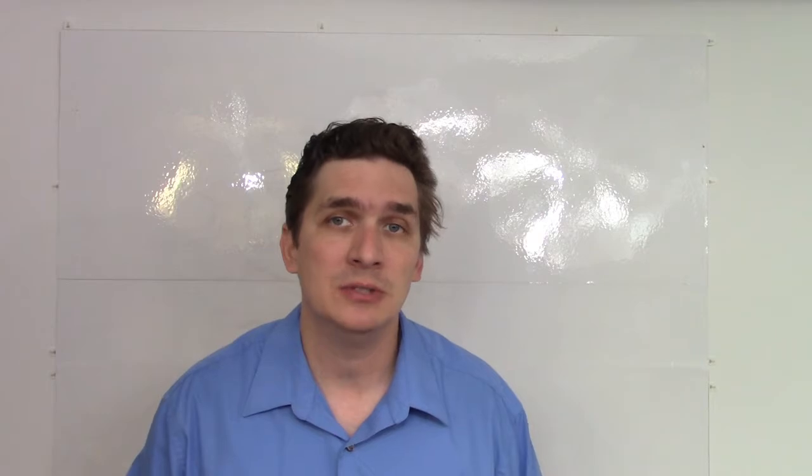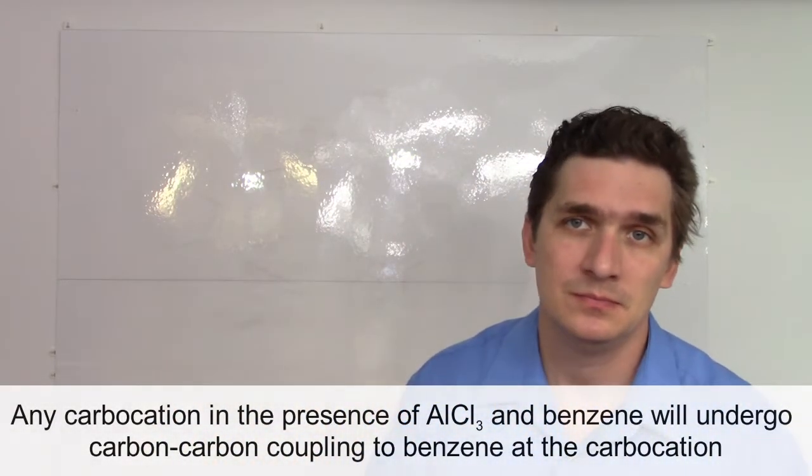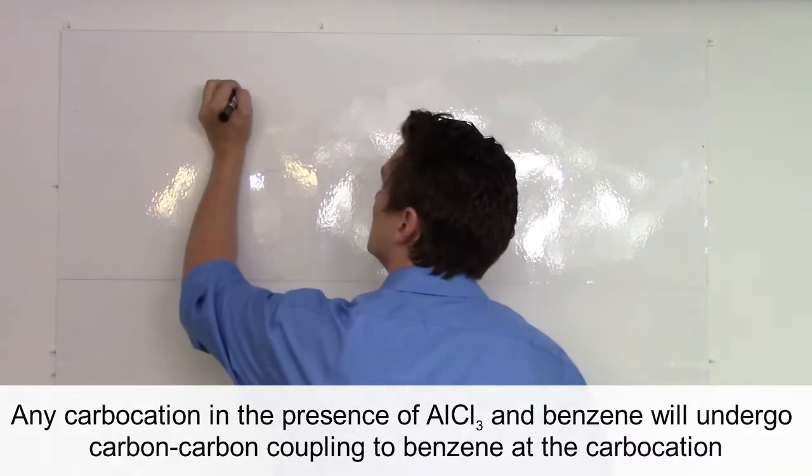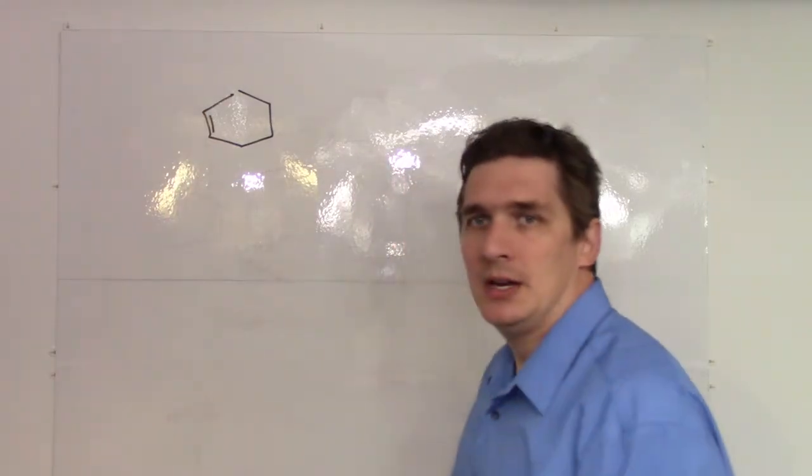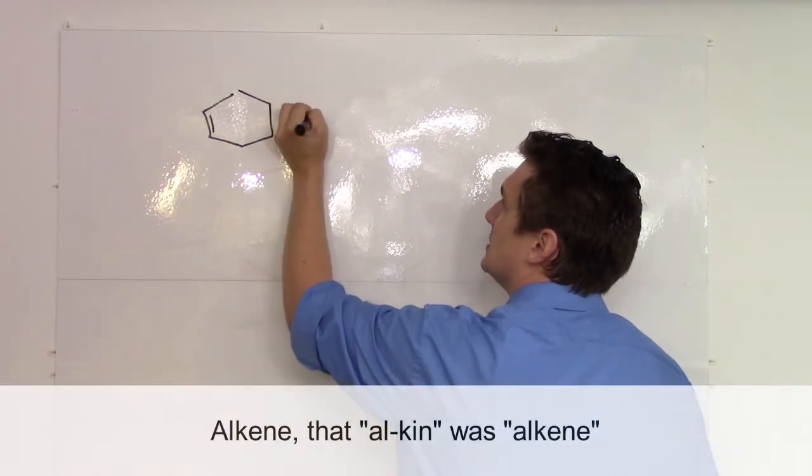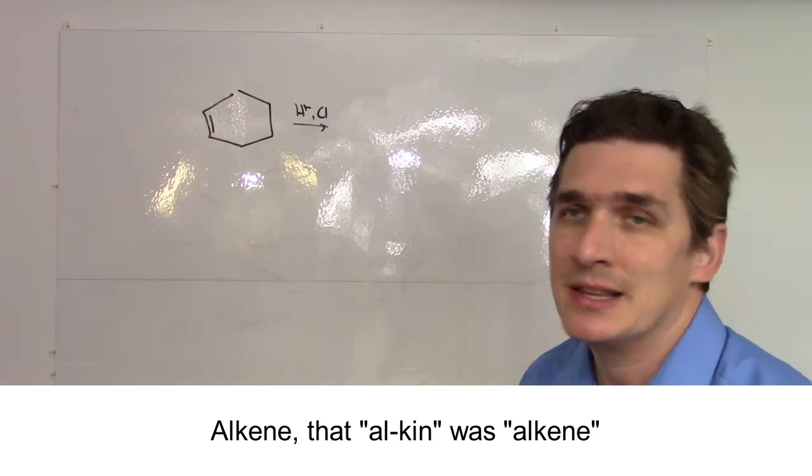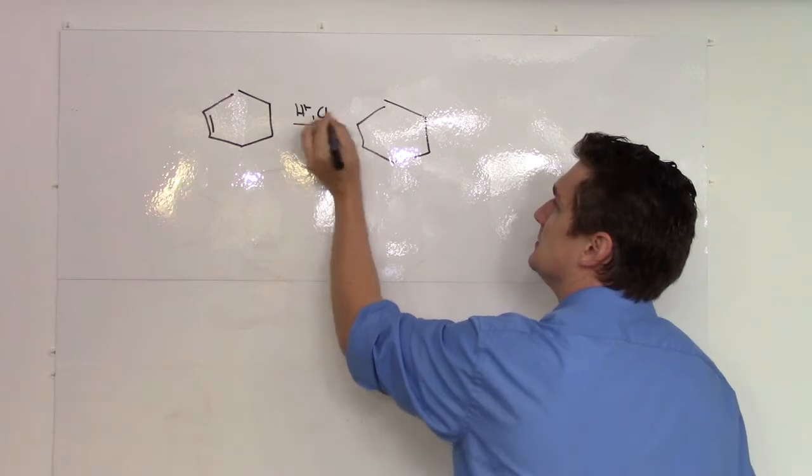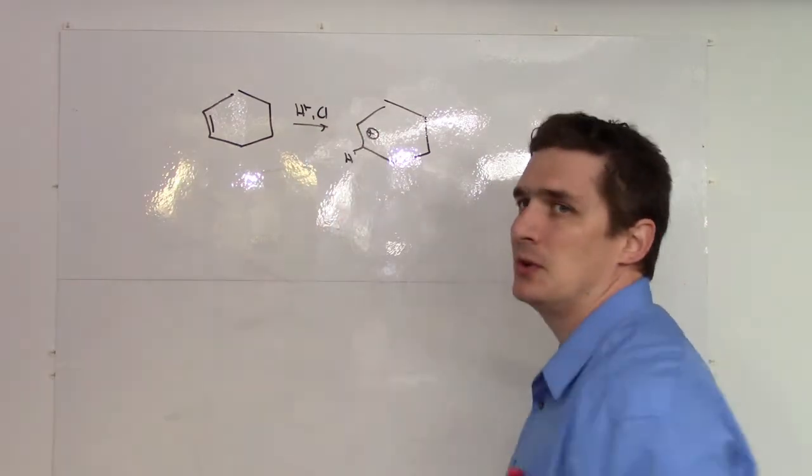All we have to do is generate a carbocation. Hopefully from Chem Orgo 1 you remember that if we have any type of alkene, we can add across that double bond with something like H+ or Cl, or H+ and water, and go through a carbocation intermediate before we attach whatever our nucleophile is.